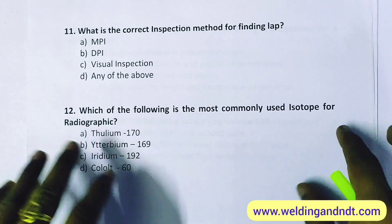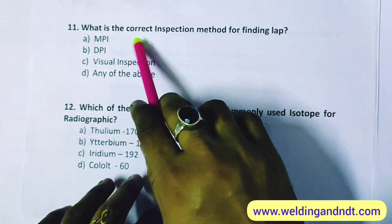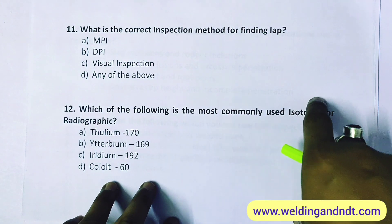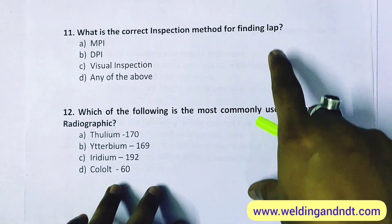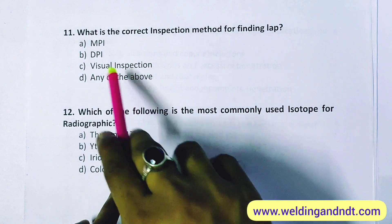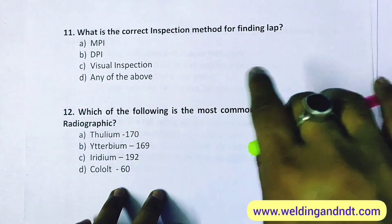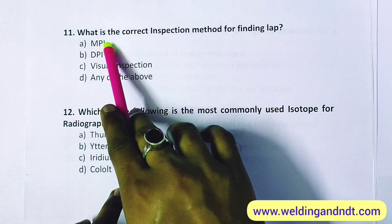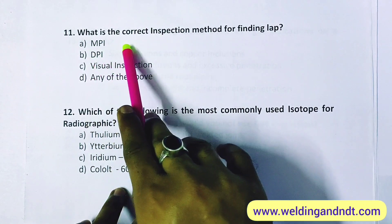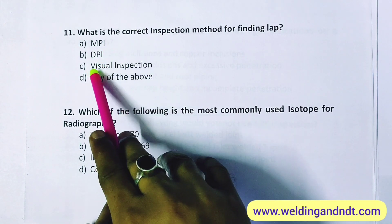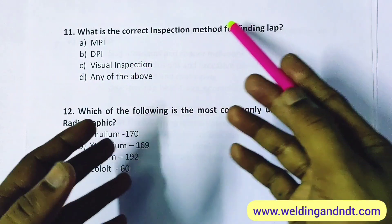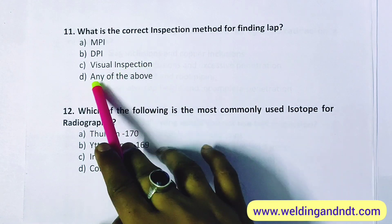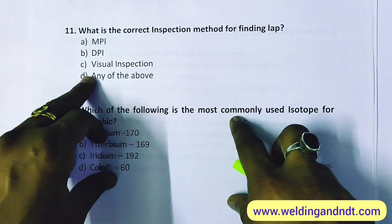Question 11: what is the correct inspection method for finding LAP? LAP is a surface or near-surface defect, so it can be checked by MPI, DPI (dye penetrant test), and visual inspection. LAP is present on the surface, so the answer is D — any of the above.